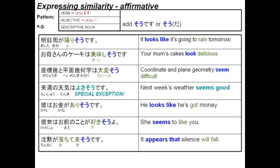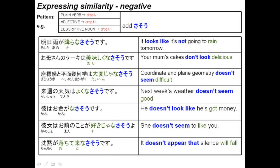3-3: expressing similarity. The pattern here for the affirmative is to take a verb in its masu form but drop the masu. If it's an adjective, drop the i, and if it's a descriptive noun just leave it as is, and add so desu or so in plain form. For example: Ashita ame ga furisou desu — it looks like it's going to rain tomorrow. Okaasan no keeki wa oishisou desu — your mum's cake looks delicious. One special exception is the adjective ii — raishu no tenki wa yosasou desu — next week's weather seems good. So ii becomes yosasou.